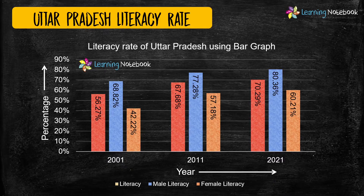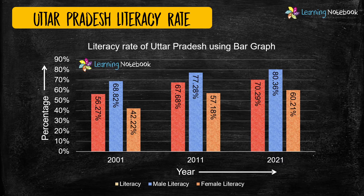Here we have used a triple bar graph to show the overall literacy rate, male literacy rate, and female literacy rate of Uttar Pradesh.